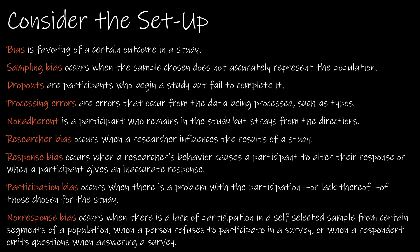A processing error is just that — it occurs from data being processed, such as typos and things like that. Researcher bias occurs when a researcher influences the result of the study. Response bias occurs when a researcher's behavior, or possibly even the way a question or survey is written, causes a participant to alter their response or give an inaccurate response. Participation bias occurs when there is a problem with the participation or lack of participation in the study. Non-response bias occurs when there's a lack of participation in a self-selected sample from certain segments of a population — when a person refuses to participate in a survey or when a respondent omits questions when answering a survey.